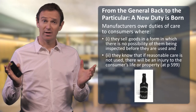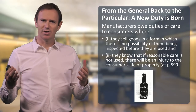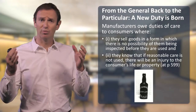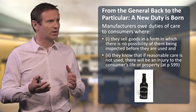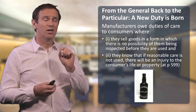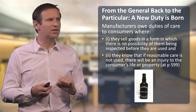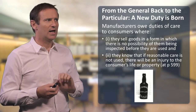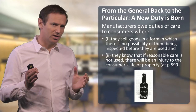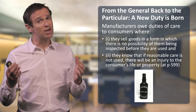To what use then did Lord Atkin put his own neighbour principle? Having used it to draw out from existing cases a general proposition, he then utilised that general proposition to help decide the particular case before him. We went from particular instances to a general principle, and from a general principle to the particular case. Applying that principle, he held — and this is the ratio of the case — that manufacturers owe duties of care to consumers, but in limited circumstances: firstly, only where they sell goods in a form where there's no possibility of them being inspected before they're used; and secondly, when they know that if reasonable care isn't used, there'll be an injury to the consumer's life or property.